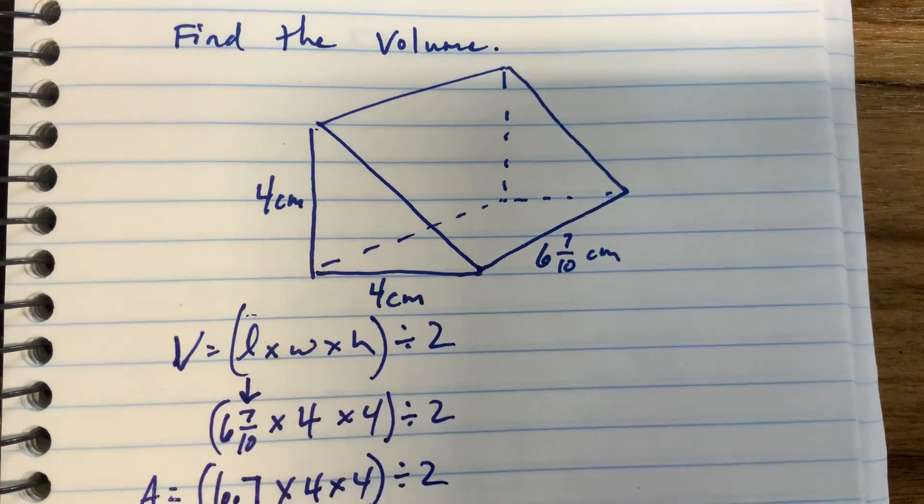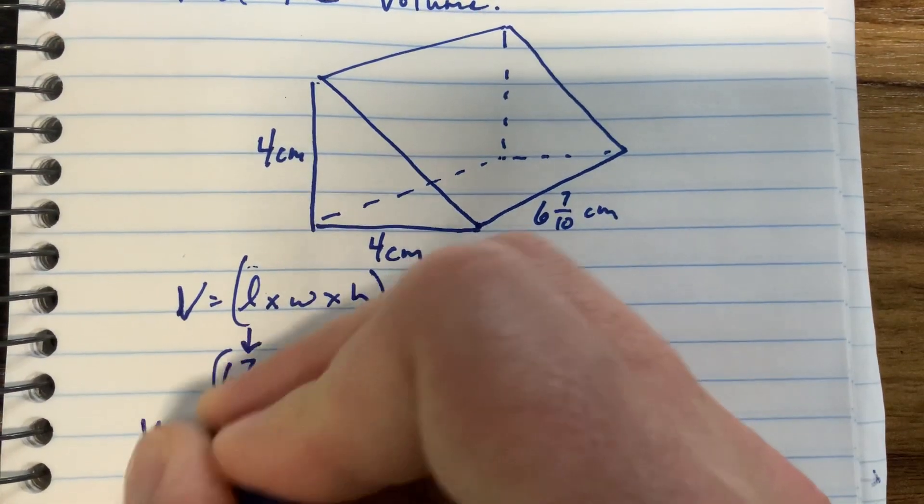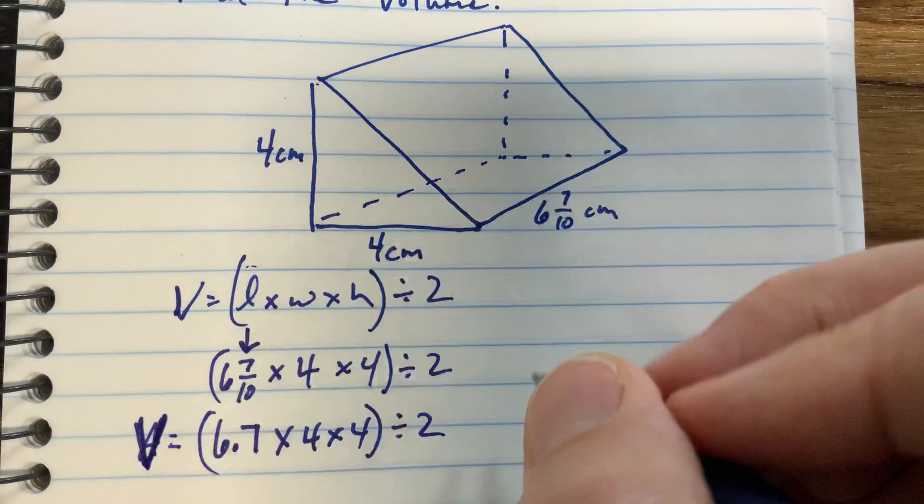So you're going to times those three numbers, divide by two, and that will give you the volume. I put area there, sorry. Volume.